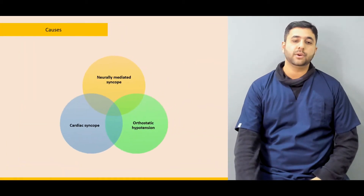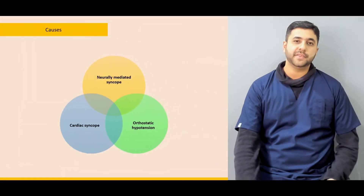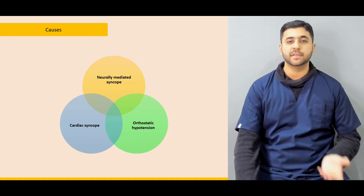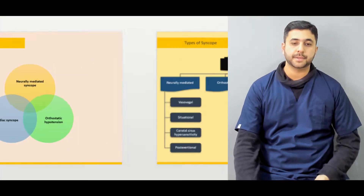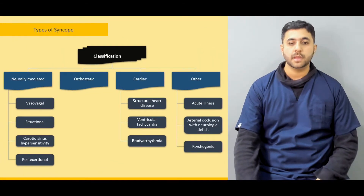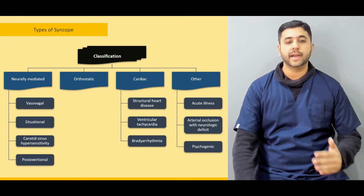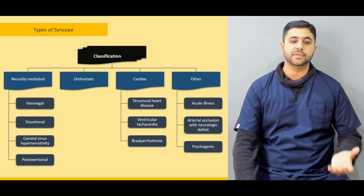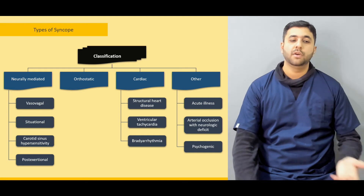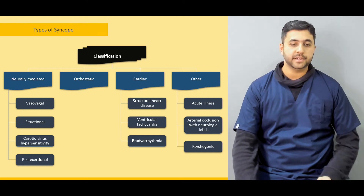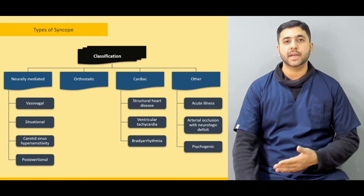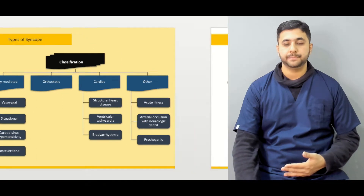Then afterwards, we are going to classify the various types of syncope — what are the various different types involving the nervous system or the cardiac symptoms. To elaborate the classification further, we are going to look at the subtypes of the various classifications, for example, what are the various types of neurally mediated syncope or what are the various cardiac causes of syncope.